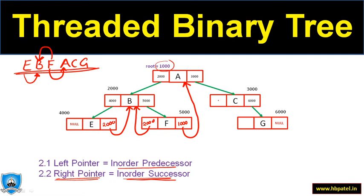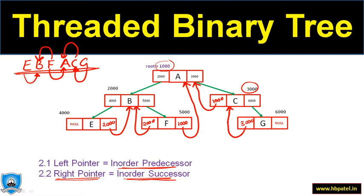The left pointer of C: in-order predecessor of C is A, so we store A's address there — C now points to A. The left pointer of G: in-order predecessor of G is C, so C's address is stored there — G now points to C. This is how all the thread pointers are assigned in a specific manner.